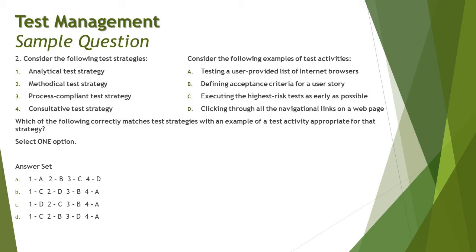We have one-line definitions and need to do a match-the-following. The question asks: which correctly matches the test strategy with an example of a test activity appropriate for that strategy? Starting with analytical — analytical is synonymous with risk-based testing, and risk-based testing involves executing the highest-risk tests as early as possible. So option C on the right side — executing the highest-risk tests as early as possible — is associated with the analytical strategy.